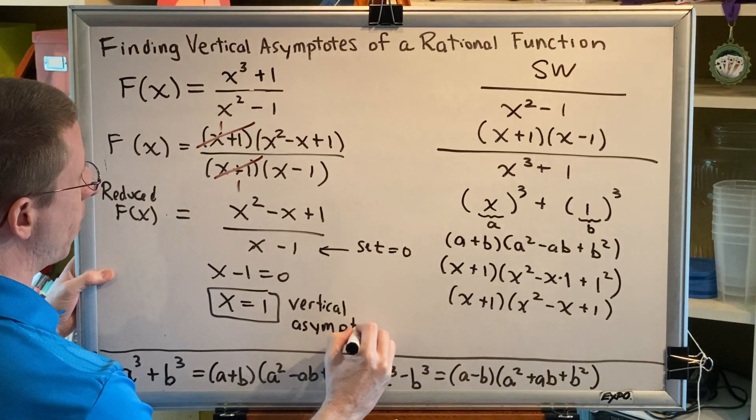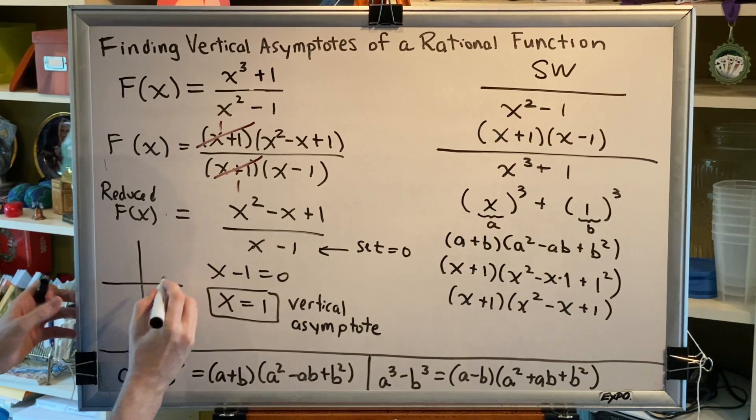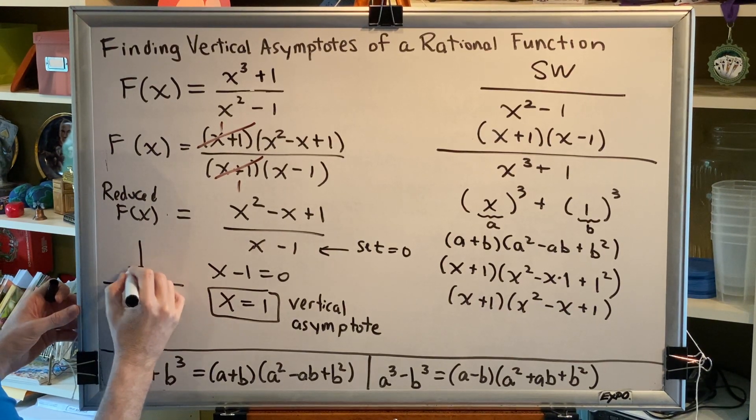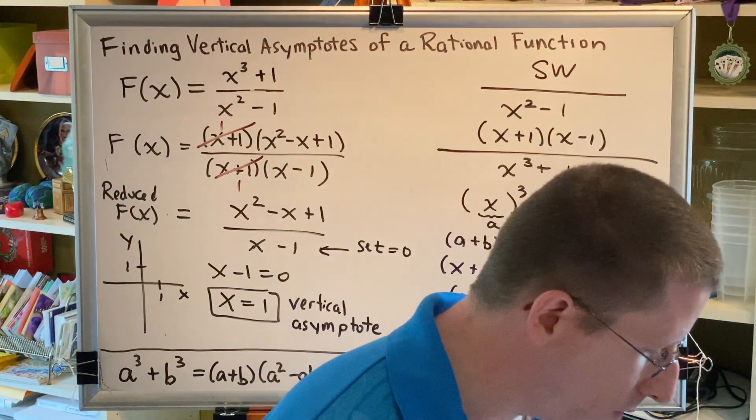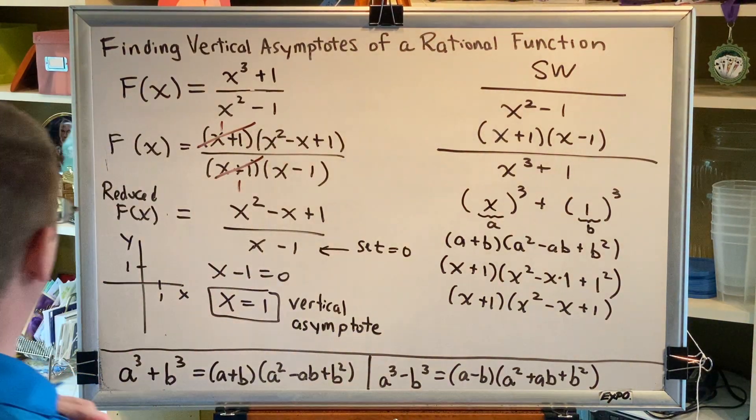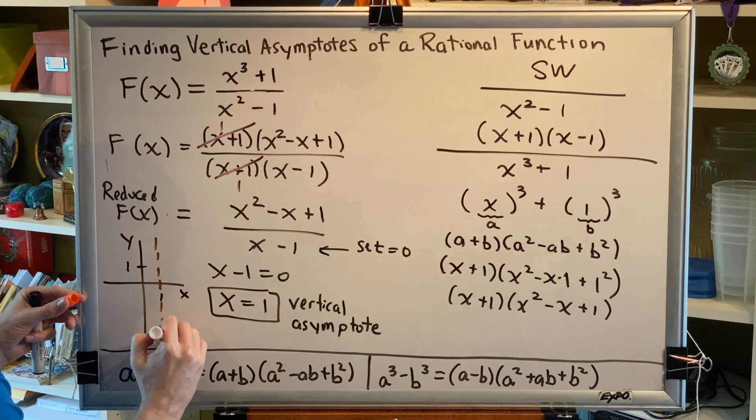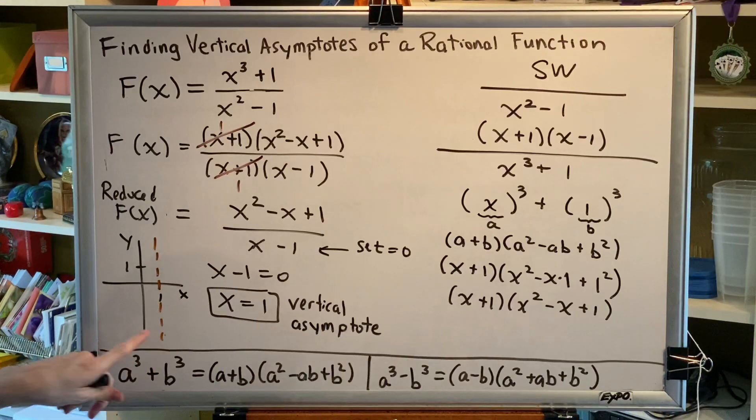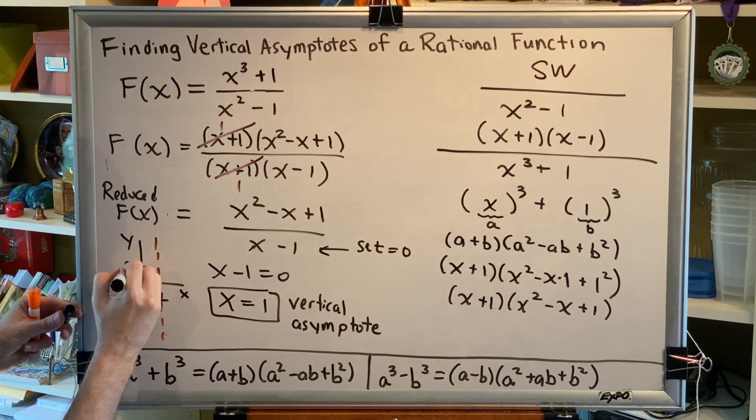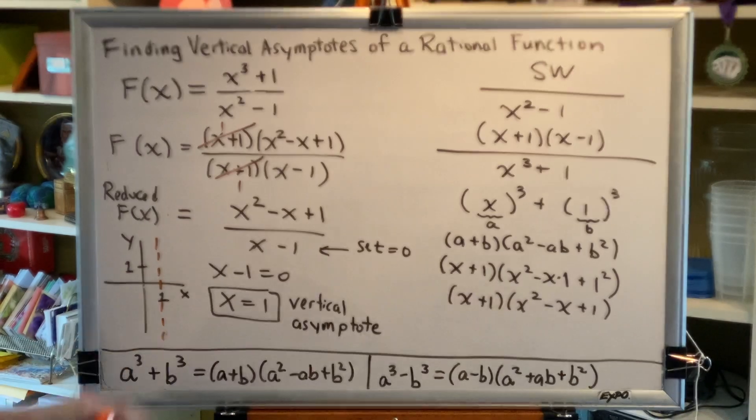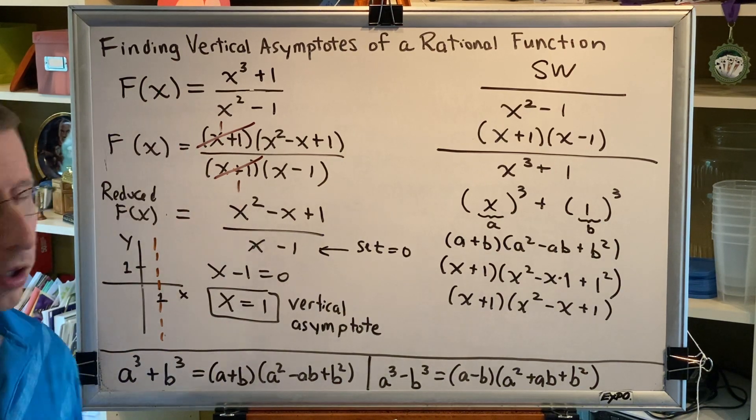Remember from your previous math learnings that x equals 1 is the equation of a vertical line. If I were to graph the line x equals 1, it would be a vertical line that crosses the x-axis at 1. So, this is what a vertical asymptote looks like. Okay, we are done with this problem. We found the only vertical asymptote for this particular rational function.